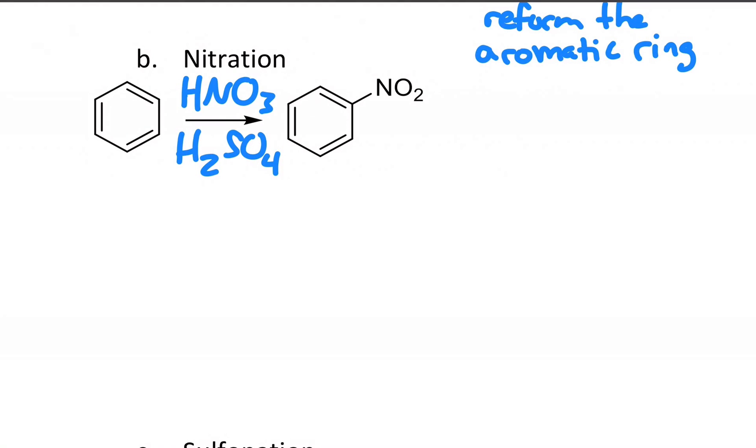If I draw out nitric acid, it looks like this with a formal charge on the nitrogen and a formal charge on the oxygen. And in the presence of sulfuric acid, I'm just going to abbreviate sulfuric acid as H+. Sulfuric acid is so strong that it actually protonates nitric acid.